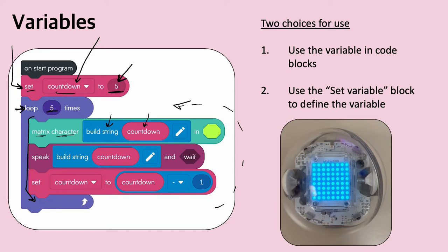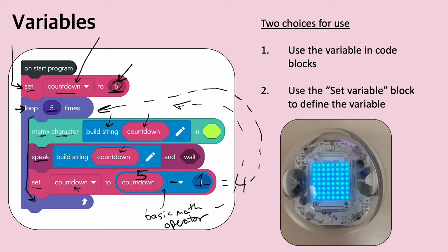So it's going to show a five on the bolt first in green. Then I tell it to speak, using that same string, so it speaks the countdown number — which at this point is five. The last thing I do is another set variable command, setting countdown to an operator — just basic math. It was five and I'm subtracting one, so the new version of countdown at the end of this loop is now four. We go back to the top, and now it displays and says four, then three, and so on.